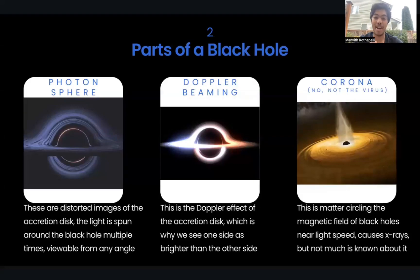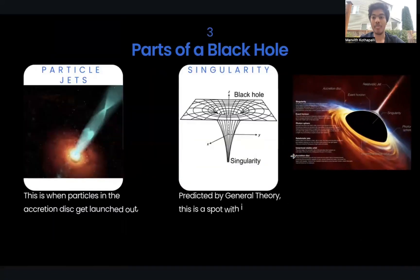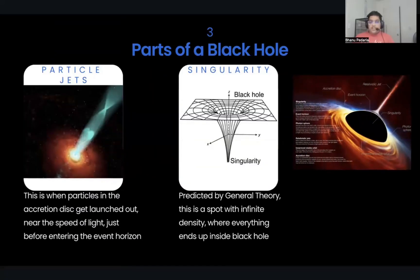Now the corona. The magnetic fields of a black hole cause matter to swirl around them near the speed of light, and it's the source of x-rays with much higher energies than those from the accretion disk. Astronomers don't know too much about this topic. Now, Banu will be talking about particle jets. Particle jets appear near the inner accretion disk in every single black hole. This happens because the particles being rerouted into jets on the opposite side of the black hole super suddenly. The particles also travel near the speed of light, but it isn't well understood why that happened. Now over to Manvit, talk about the singularity.